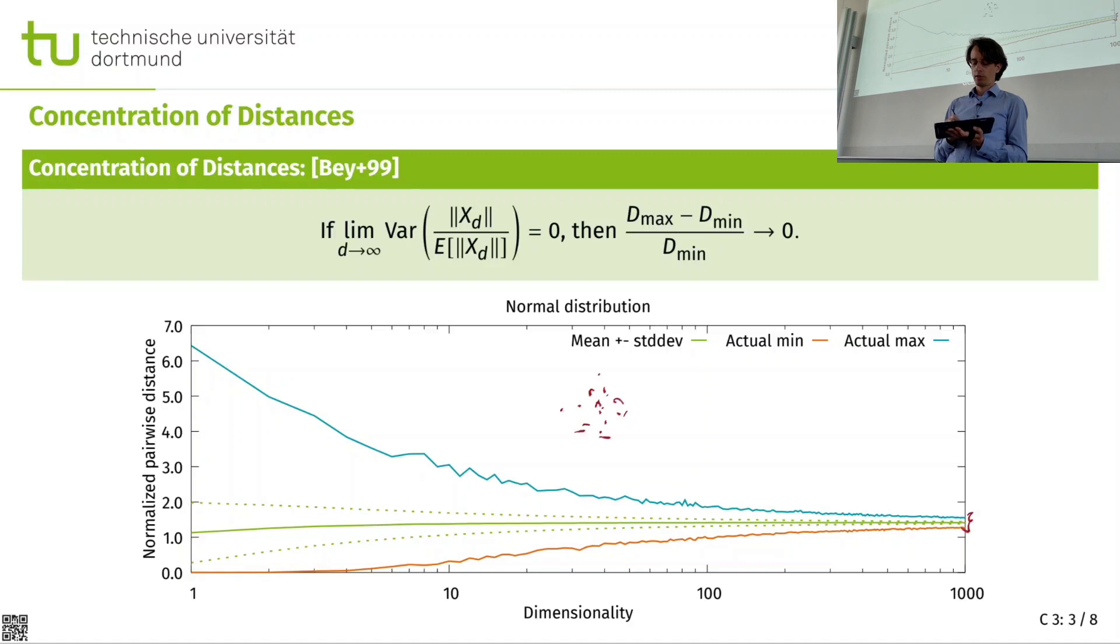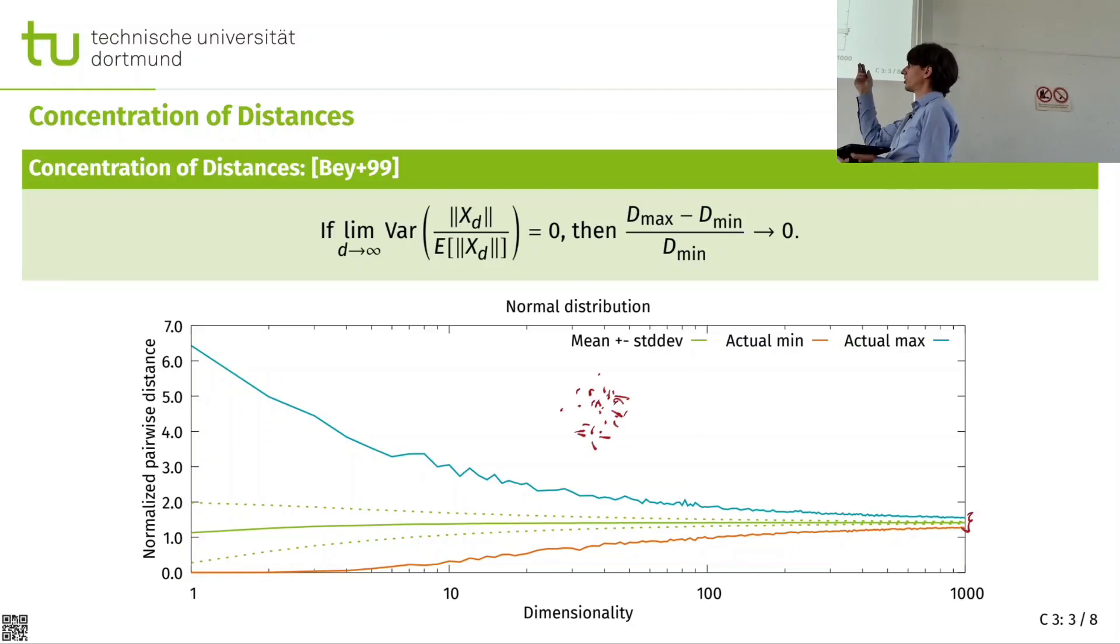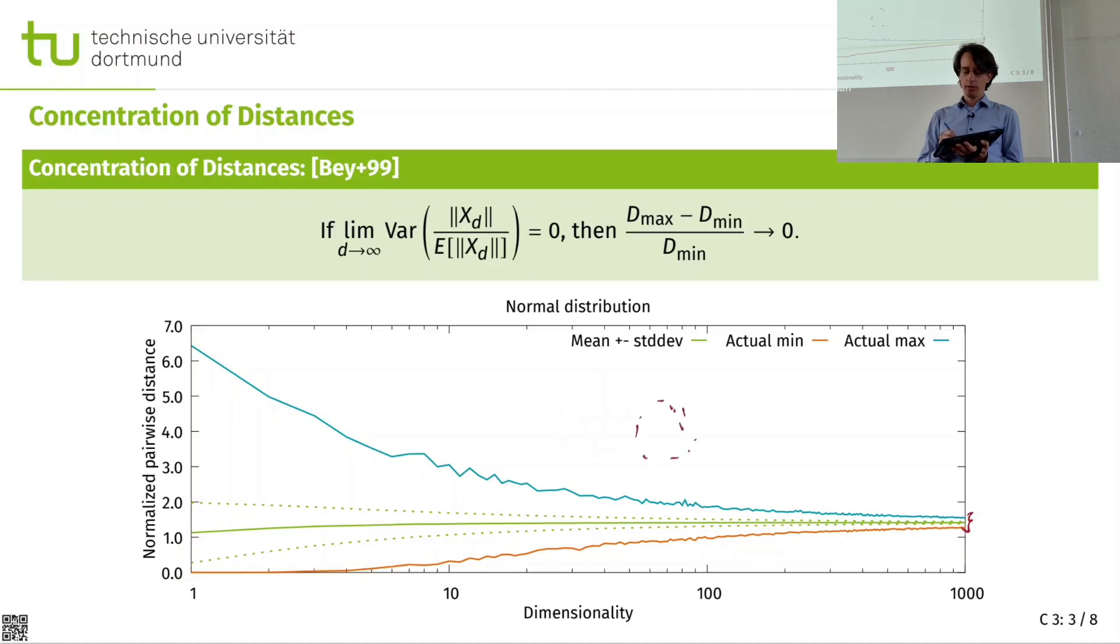And that's kind of interesting because remember that we are looking at Gaussians. So we have this Gaussian blob. And now pick any two points from here and they have almost the same distance. That kind of means our data doesn't actually look like a ball anymore. It kind of looks more like a high dimensional shell.